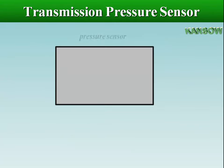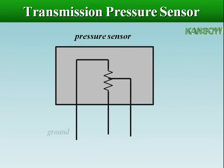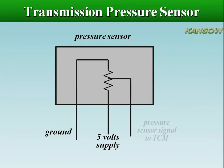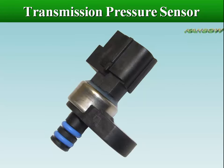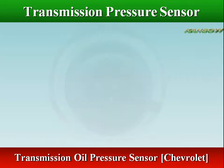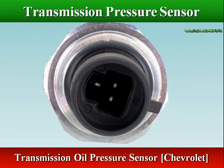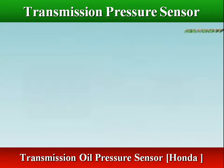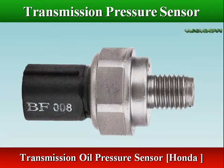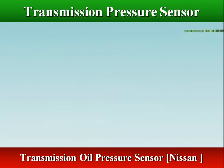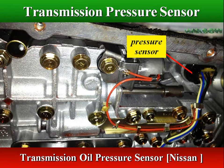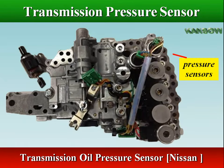The transmission pressure sensor converts the hydraulic pressure into an output voltage and transmits the signal to the TCM. The TCM uses this signal in calculations for controlling switching or other functions; the output voltage varies depending on pressure variations, with voltage increasing as pressure increases. The transmission may have more than one fluid pressure sensor to detect the pressure applied to the clutches or to detect the overall line pressure inside the transmission.